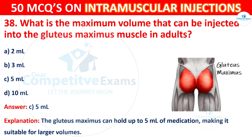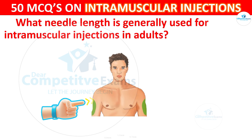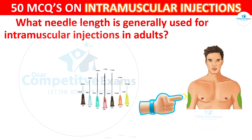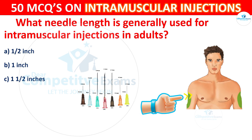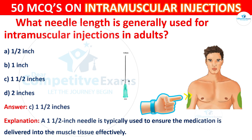Question 39: What needle length is generally used for intramuscular injection in adults? Options are: half inch, 1 inch, 1 and a half inches, or 2 inches. The correct answer is 1 and a half inches. A 1.5-inch needle is typically used to ensure the medication is delivered into the muscle tissues effectively.